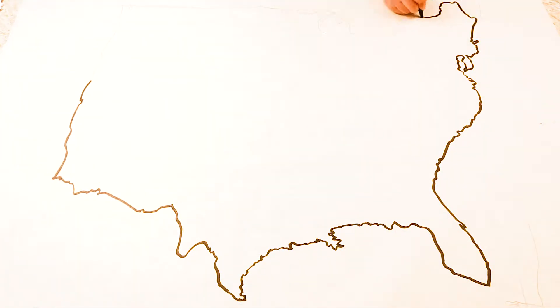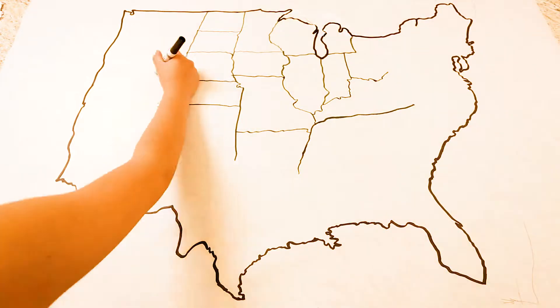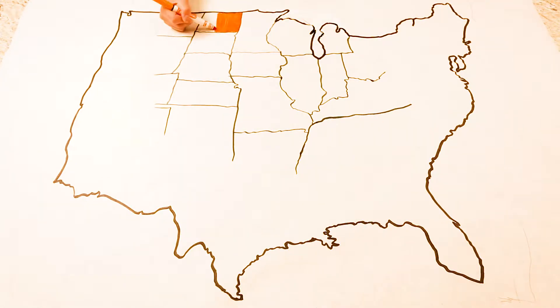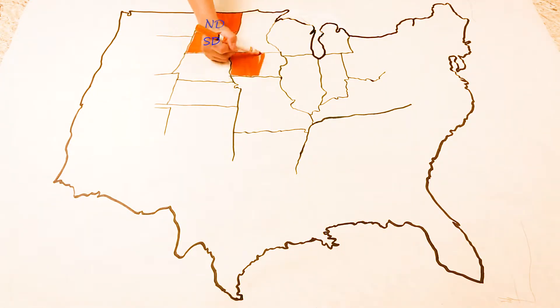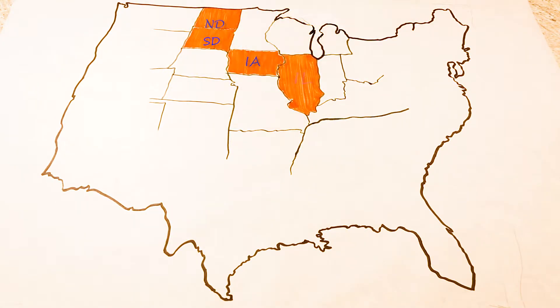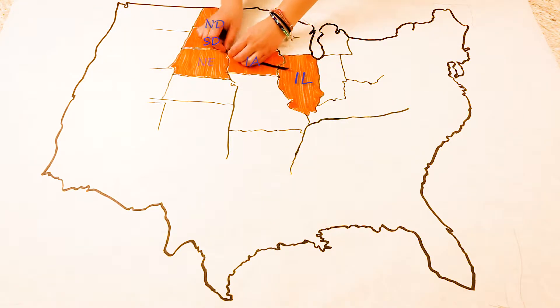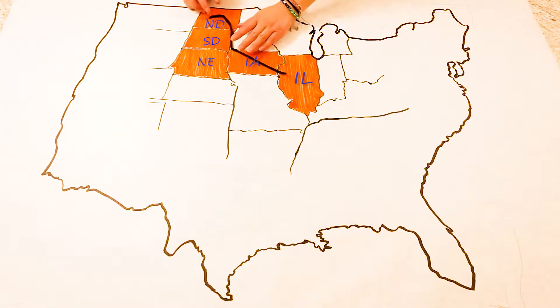Let's start by locating the most affected areas of DAPL. As you can see, we are coloring in areas that are more severely affected. The closer the residents of the surrounding area to the pipeline, the more they feel the effects. Here is where the pipeline is located.